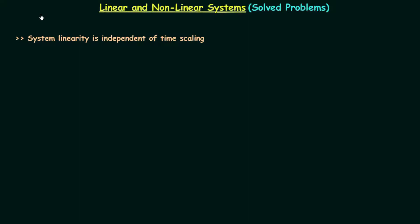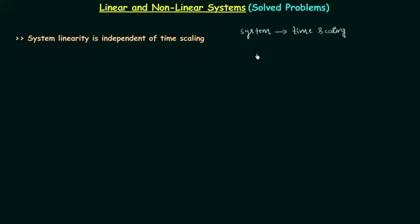In the last lecture I explained three problems based on linear and nonlinear systems. After solving the problems we got one important conclusion: the system linearity is independent of time scaling. So if you have a system that is only performing time scaling, then we can say that the system is linear in nature.